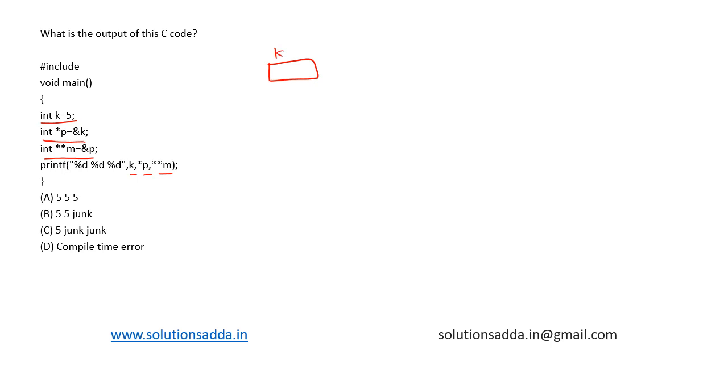Here k, the value of k is 5, and it is stored at location 100. Now p is a pointer variable which is storing the address 100. So this is the address, and it will point to here.